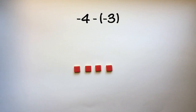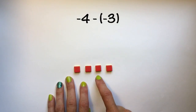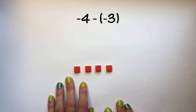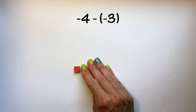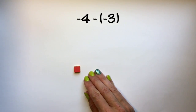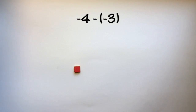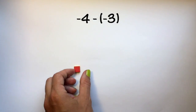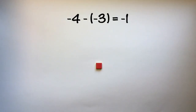I have negative 4 represented and I need to subtract negative 3. I have three negative tiles that I can take away, so in this case I don't actually have to add any zero pairs. I can remove those three negative tiles and I'm left with negative 1.